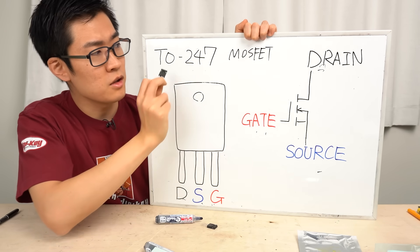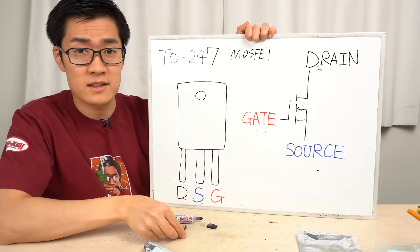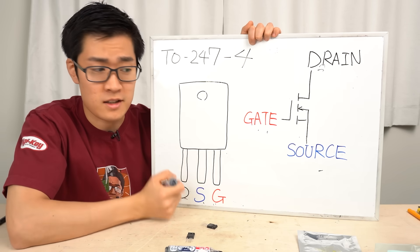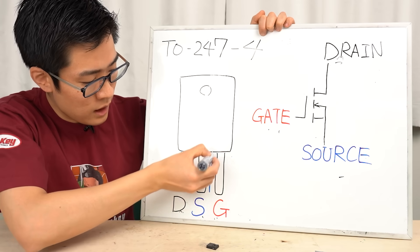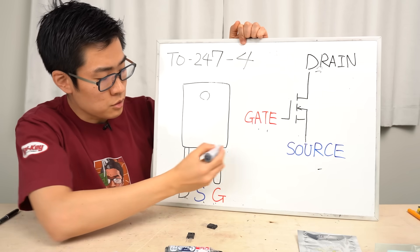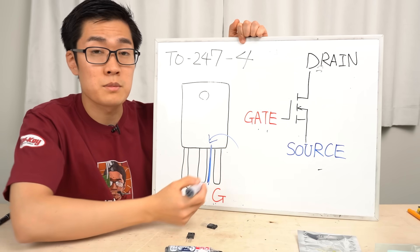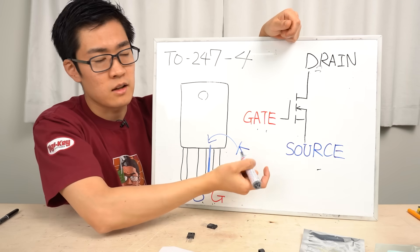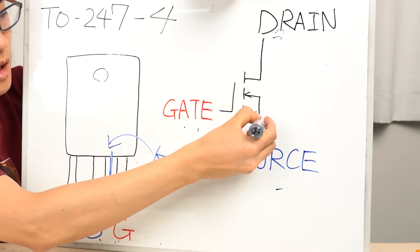Next, let's take a look at the four-lead package TO247-4. The basic setup of the drain, source, and gate is the same as the three-lead package, but there's an extra lead added between the source and the gate. This terminal is sometimes referred to as the driver source or the Kelvin terminal. For now, let's just call it K, short for Kelvin Terminal. The Kelvin Terminal branches out from the source terminal.